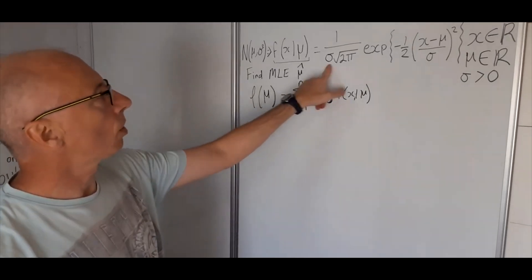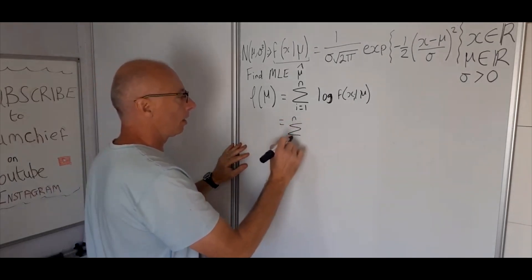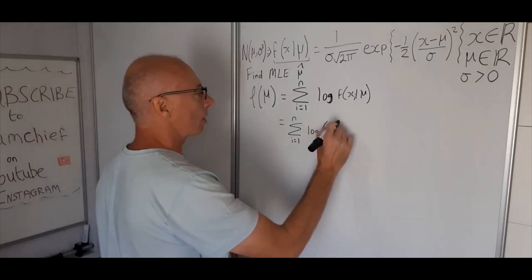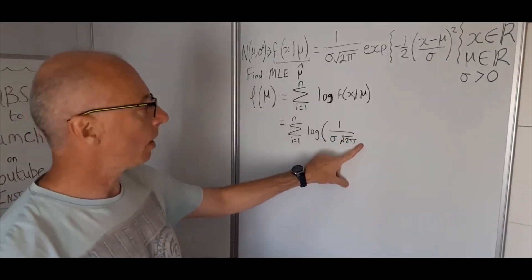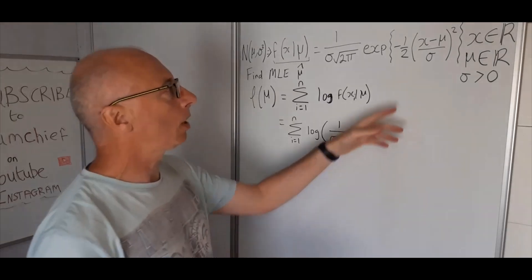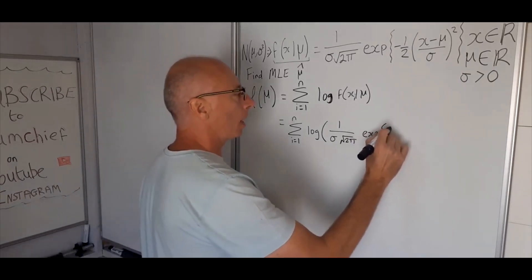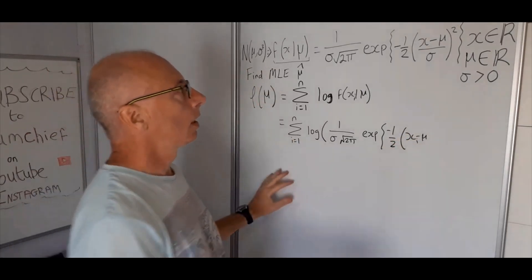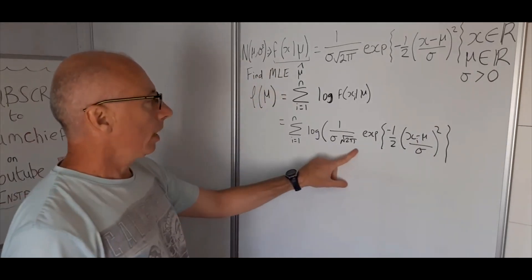That equals the sum of all of these. So we get the sum from i equals 1 to n of the log of this expression. We need to take the logarithm of the normal PDF, which I'll write as 1 over sigma times the square root of 2 pi — I prefer sigma in front — and then exponential of minus one half times (x_i minus mu) over sigma, squared. That's a big bracket.